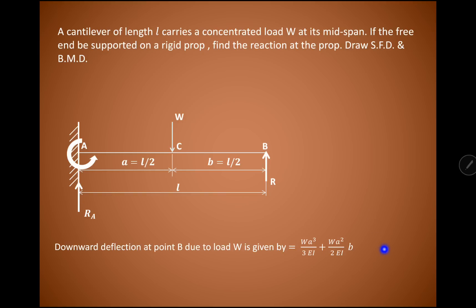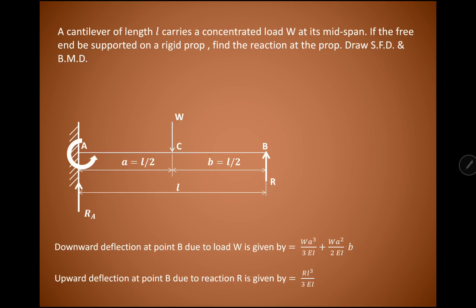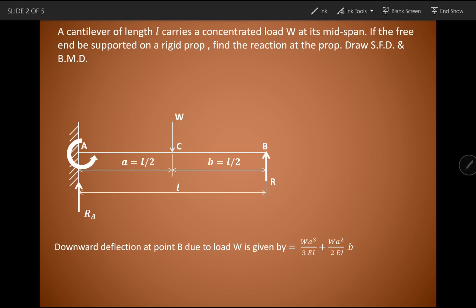Next, we assume that the cantilever carries the upward reaction R at the free end. Because of this upward reaction, the deflection that takes place is the case of a cantilever beam carrying an upward load. In that case, the deflection is given by RL³/(3EI).